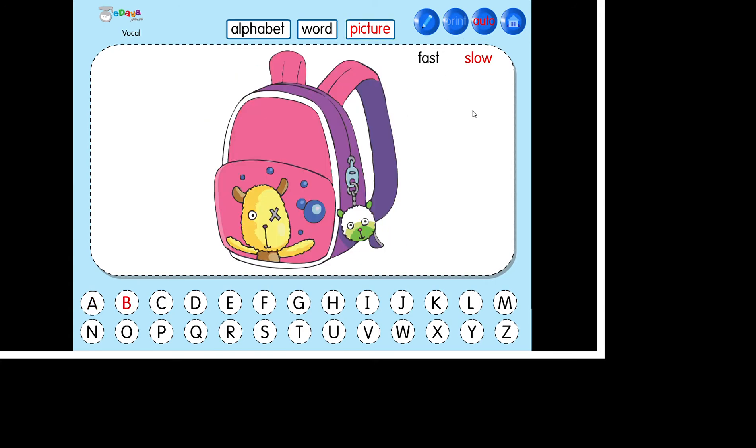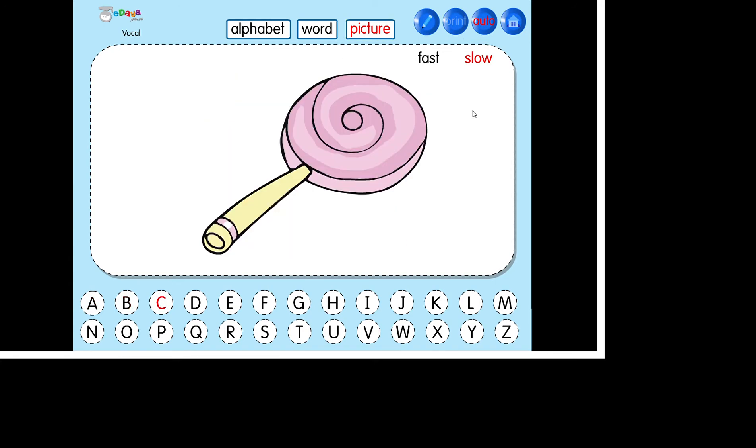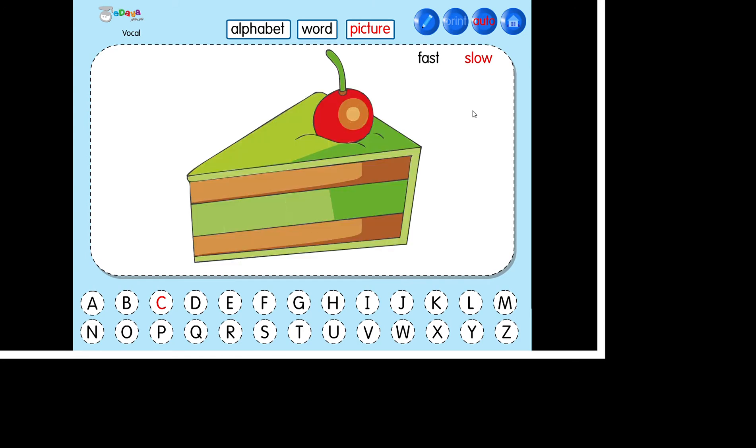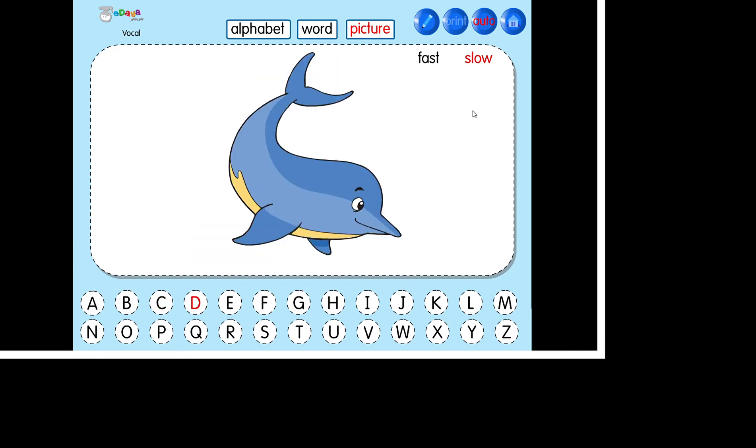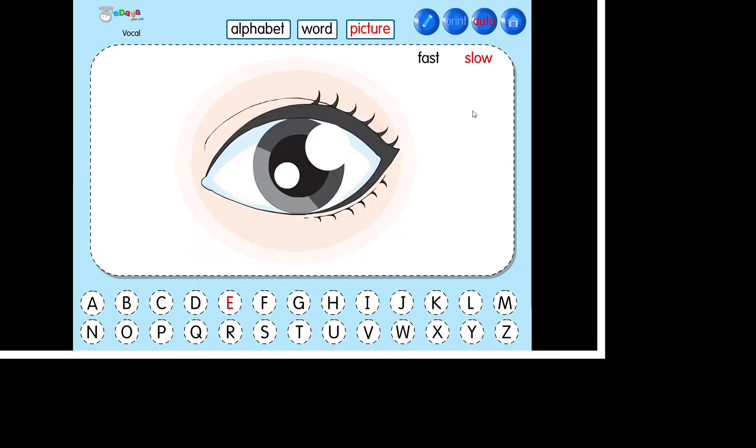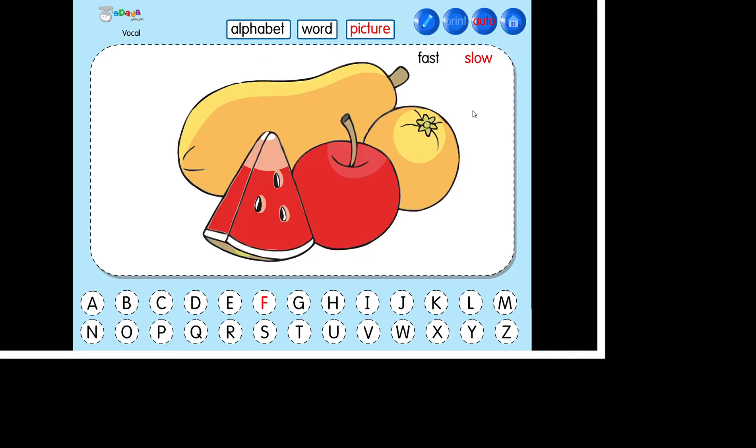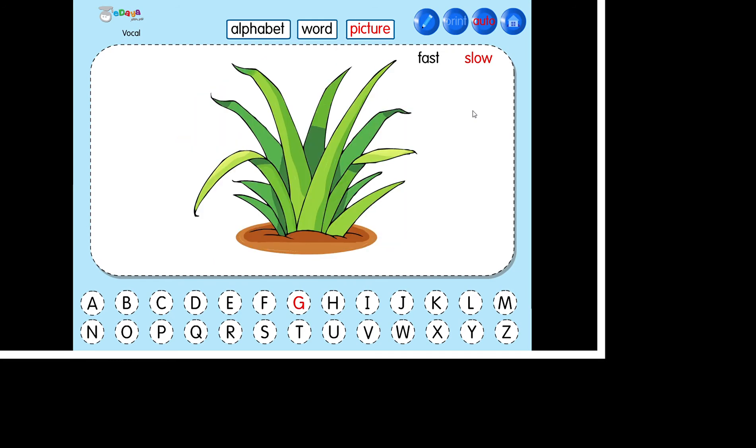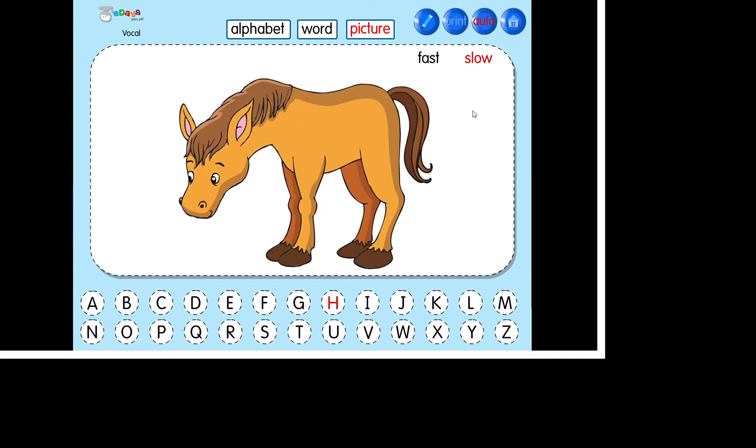Arm. Bag. Book. Candy. Cake. Duck. Dolphin. Ear. Eye. Hawk. Fruit. Grapes. Grass. Horse. Hen.